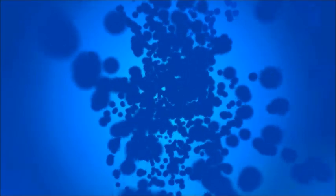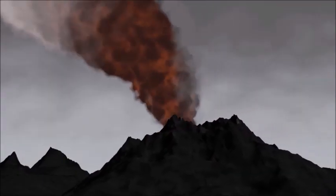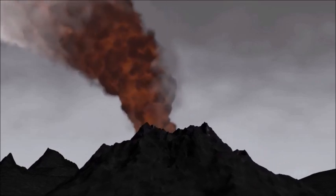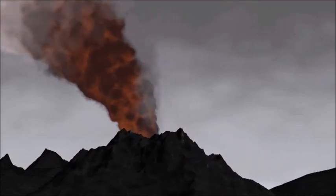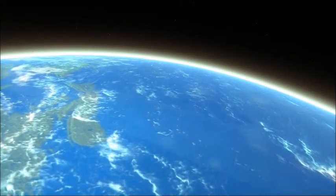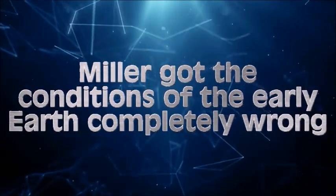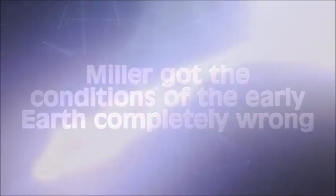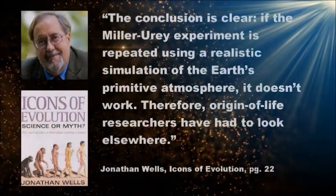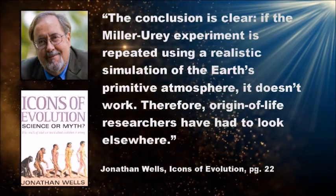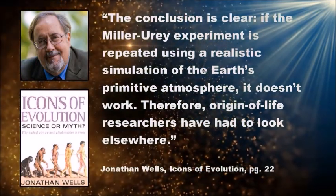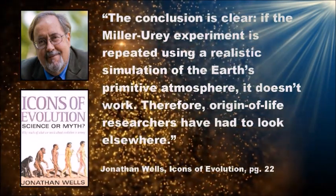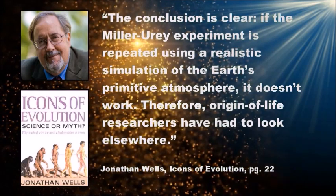However, there are numerous acknowledged problems with this experiment, which cast doubt on it having any relevance to modern origin of life studies. For one thing, Miller assumed that the early Earth didn't have oxygen in its atmosphere, which is now known to be false. Additionally, the hydrogen Miller used in his experiment would have realistically escaped from the Earth's atmosphere. So Miller got the conditions of the early Earth completely wrong. Experiments repeated under realistic conditions yield no amino acids. This has led Jonathan Wells to say, the conclusion is clear. If the Miller-Urey experiment is repeated using a realistic simulation of the Earth's primitive atmosphere, it doesn't work. Therefore, origin of life researchers have had to look elsewhere.